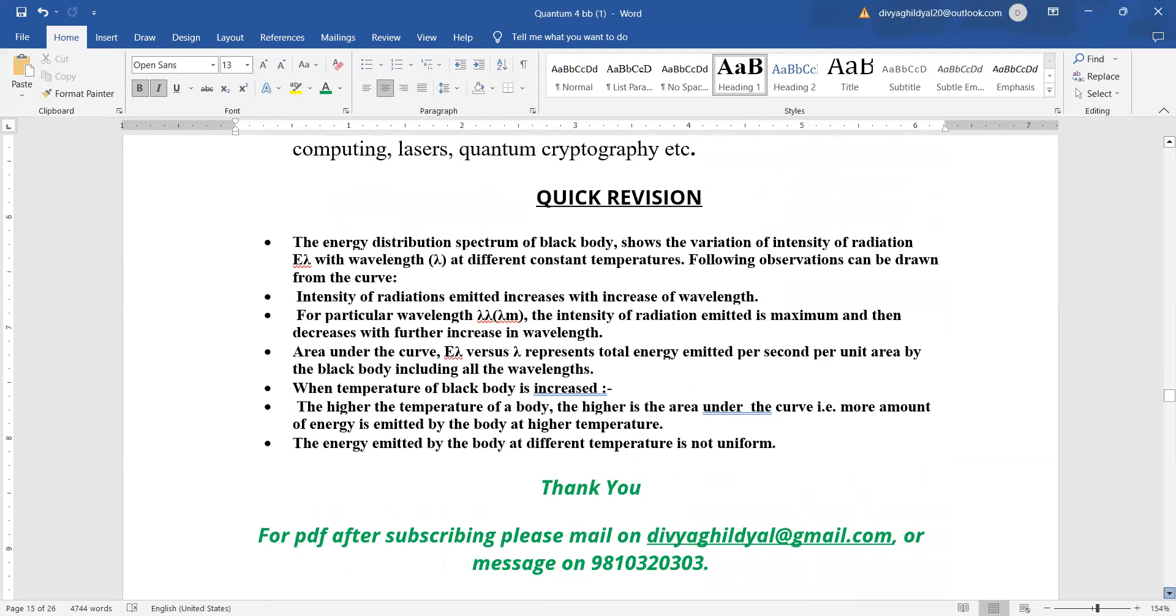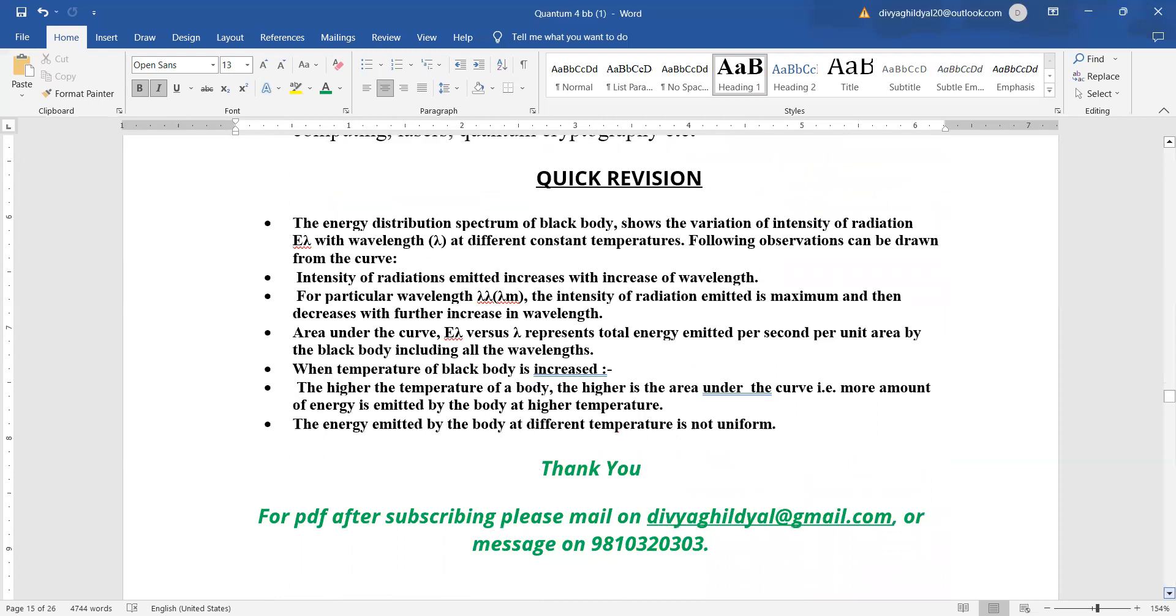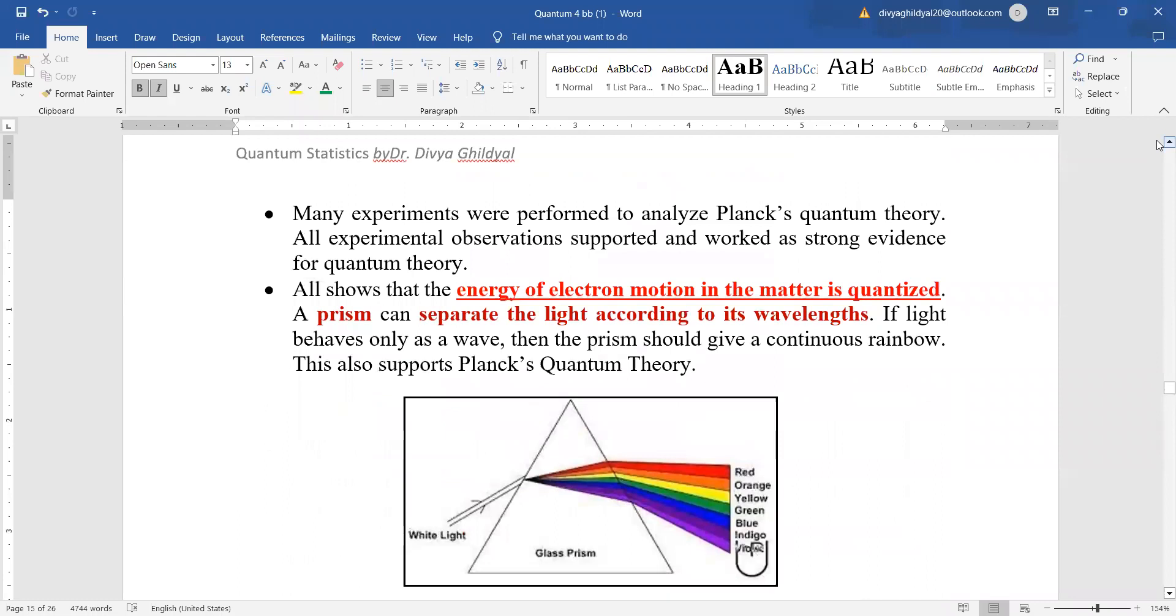So quickly what did we study for the plot? We studied that when we are plotting the intensity of radiation with wavelength at different temperatures, then intensity of radiation emitted increases with increase of wavelength. For a particular wavelength, the intensity of radiation emitted is maximum and then it is decreasing with further wavelength. Area under the plot is giving us Stephen's law. Temperature of a black body when it is increased, the higher the temperature, the higher the area under the curve and the more the amount of energy is emitted by the body at higher temperature. The emitted energy by the body at different temperatures is not uniform and Planck's law of radiation supports the quantum theory stating that energy of electron in motion or matter is quantized.